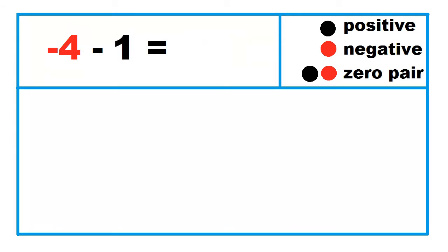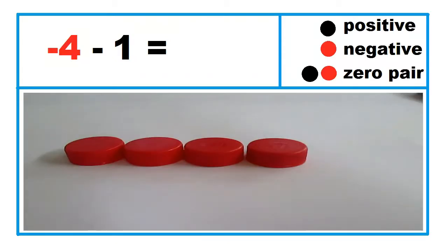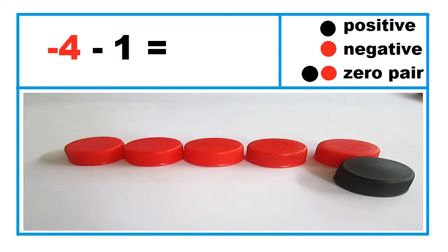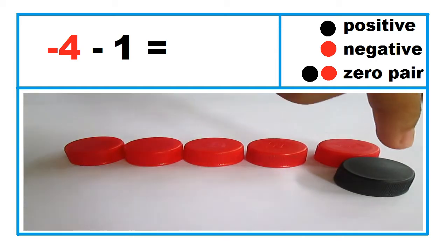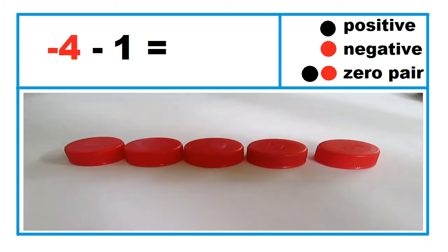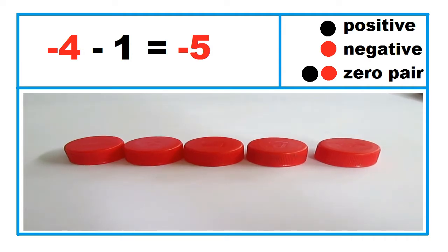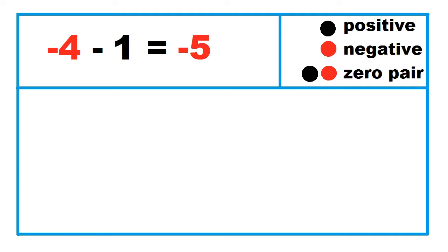Another example: negative 4 minus 1. Since you cannot take a black cap from four red caps, introduce a zero pair, then take away the black cap. Negative 4 minus 1 equals negative 5.